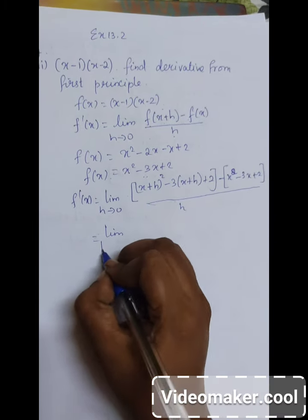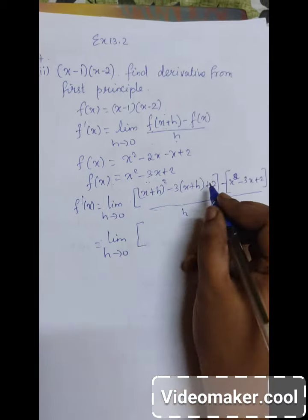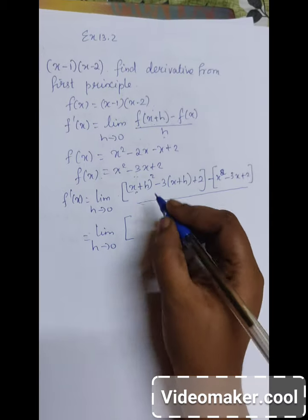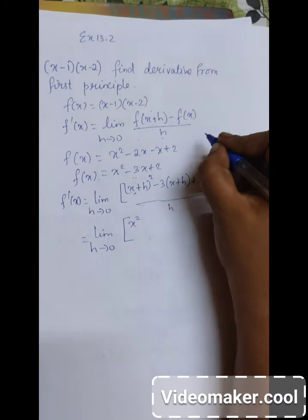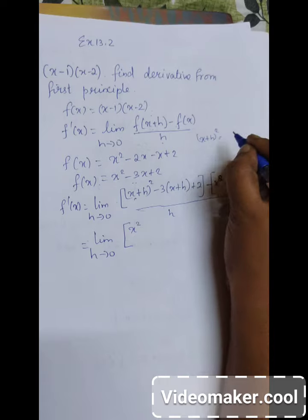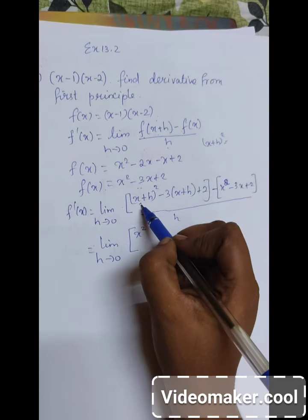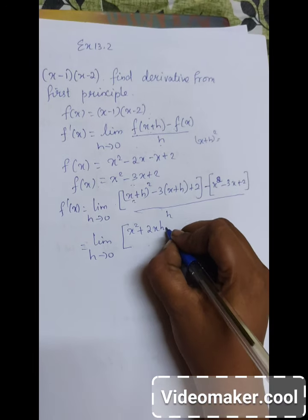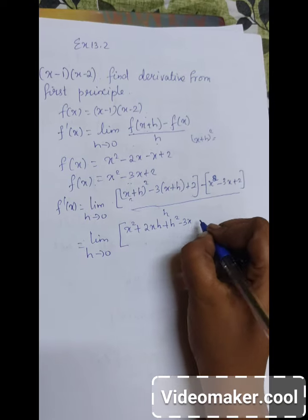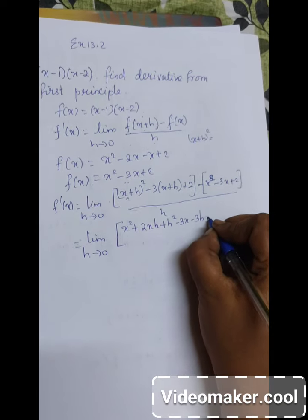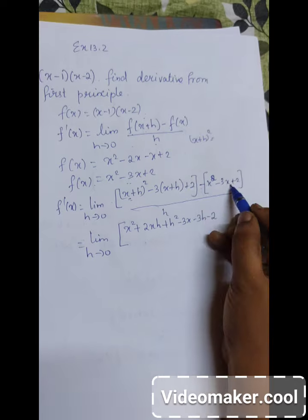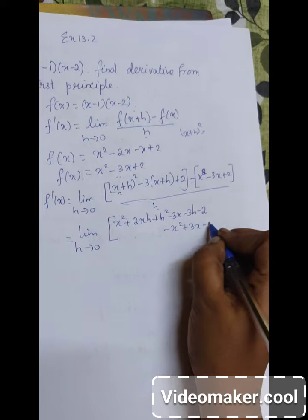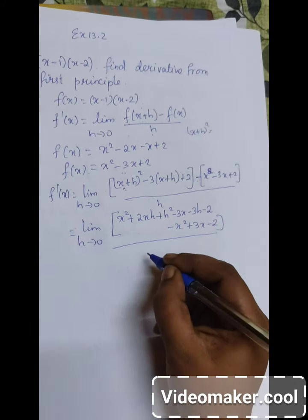I am going to expand x plus h the whole square using the a plus b whole square identity, giving us a squared plus 2ab plus b squared. So x plus h whole squared becomes x squared plus 2xh plus h squared. Then we have minus 3x minus 3h minus 2, and taking the minus sign inside the f of x term we get minus x squared plus 3x minus 2, all divided by h.